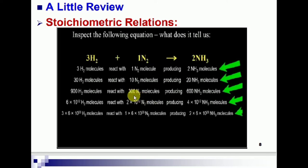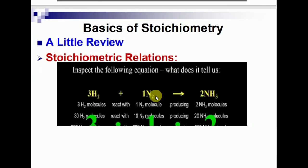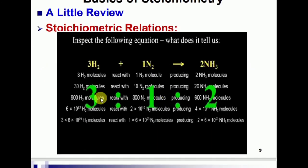For example, if you have 300 nitrogen molecules, hydrogen must be 900 molecules — three times nitrogen. The ratio is always constant. In terms of molecules, 6×10¹² hydrogen molecules react with 2×10¹² nitrogen molecules, and the ratio remains constant. This is the stoichiometric relation — the stoichiometric amount is always constant.